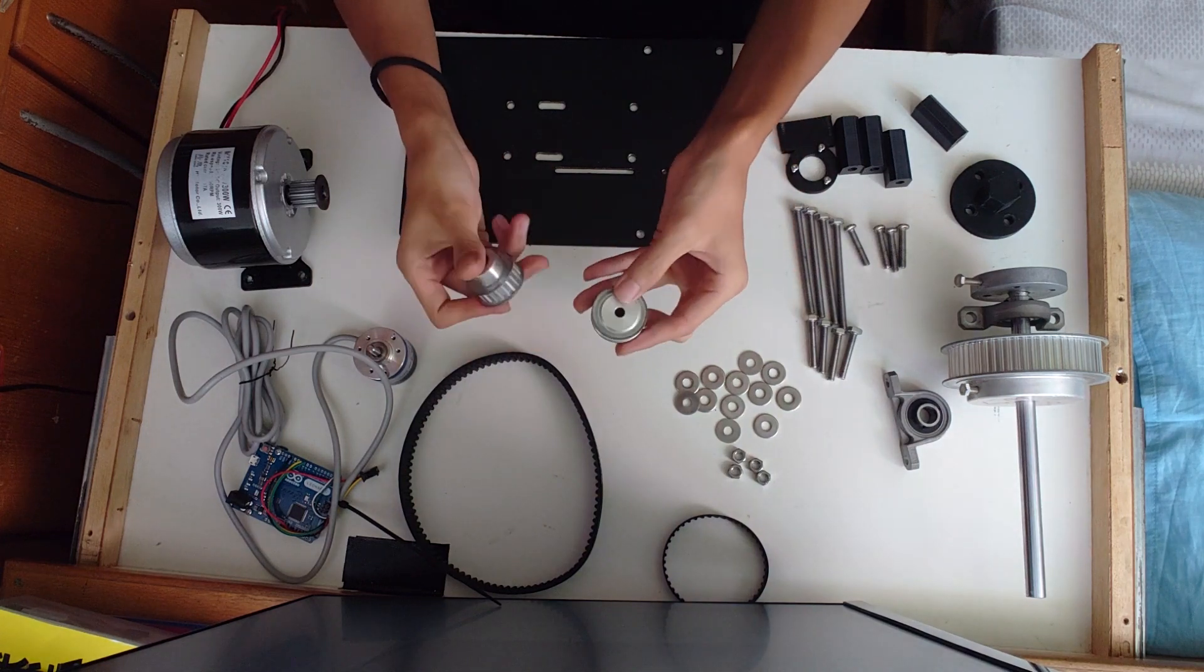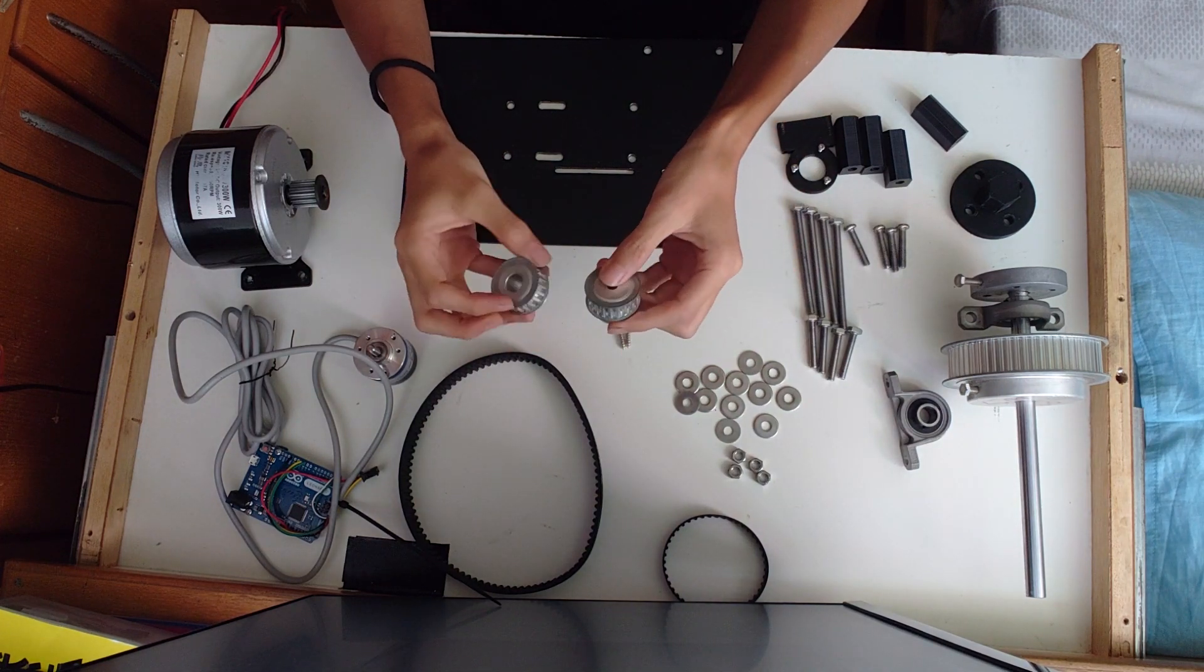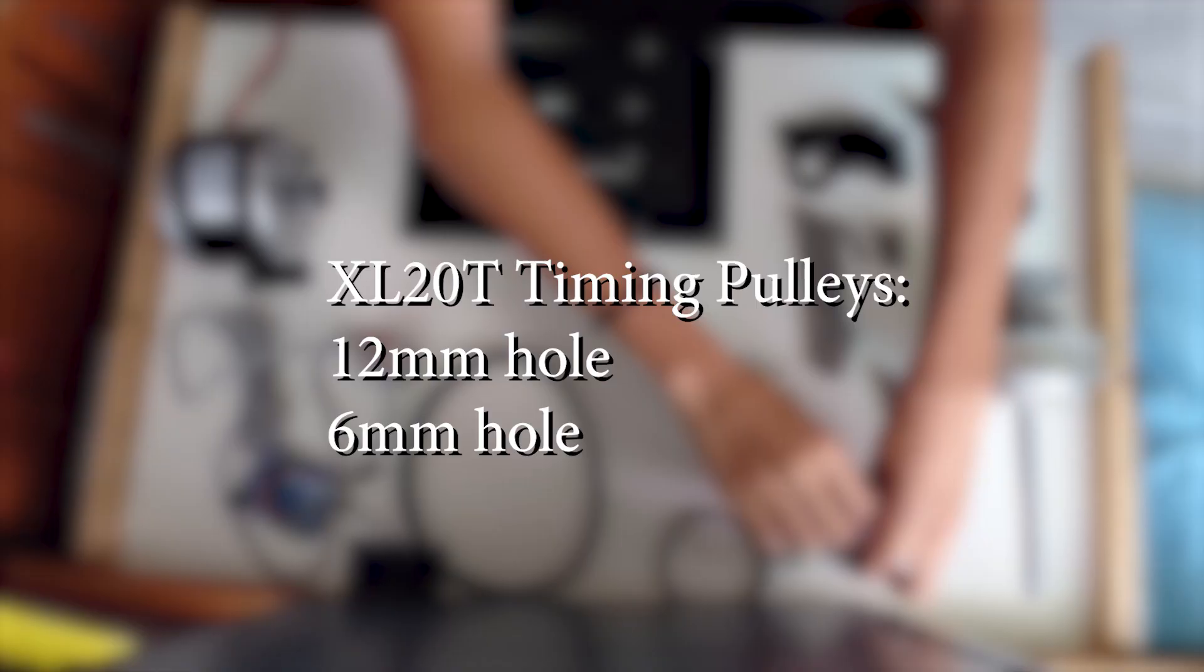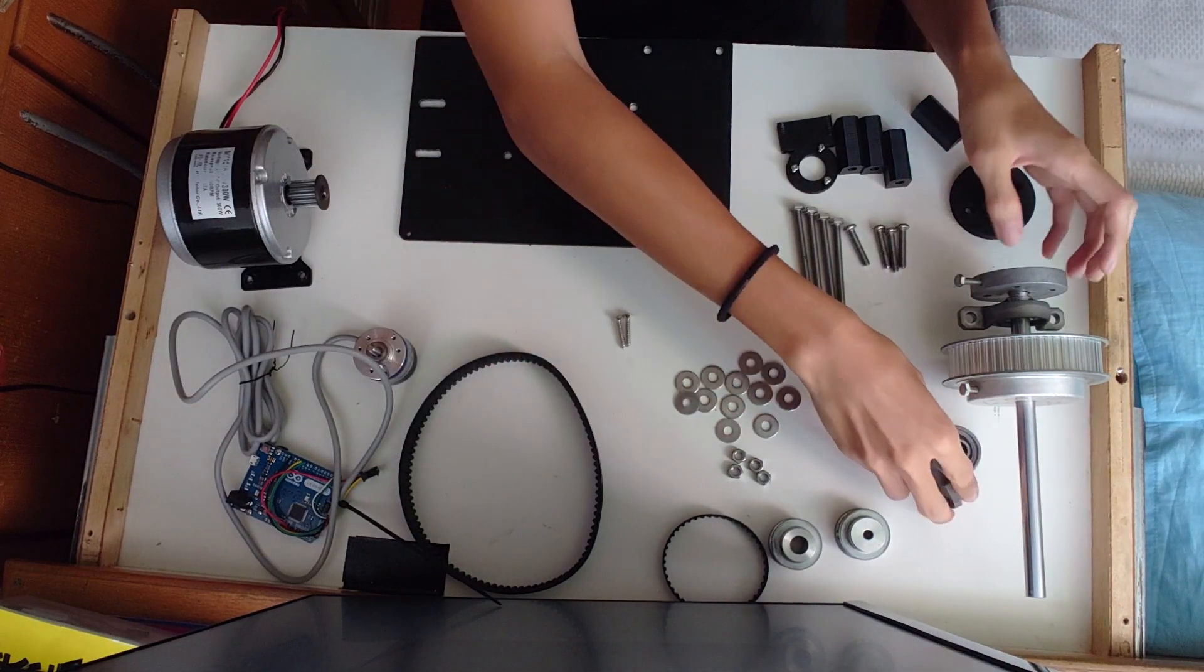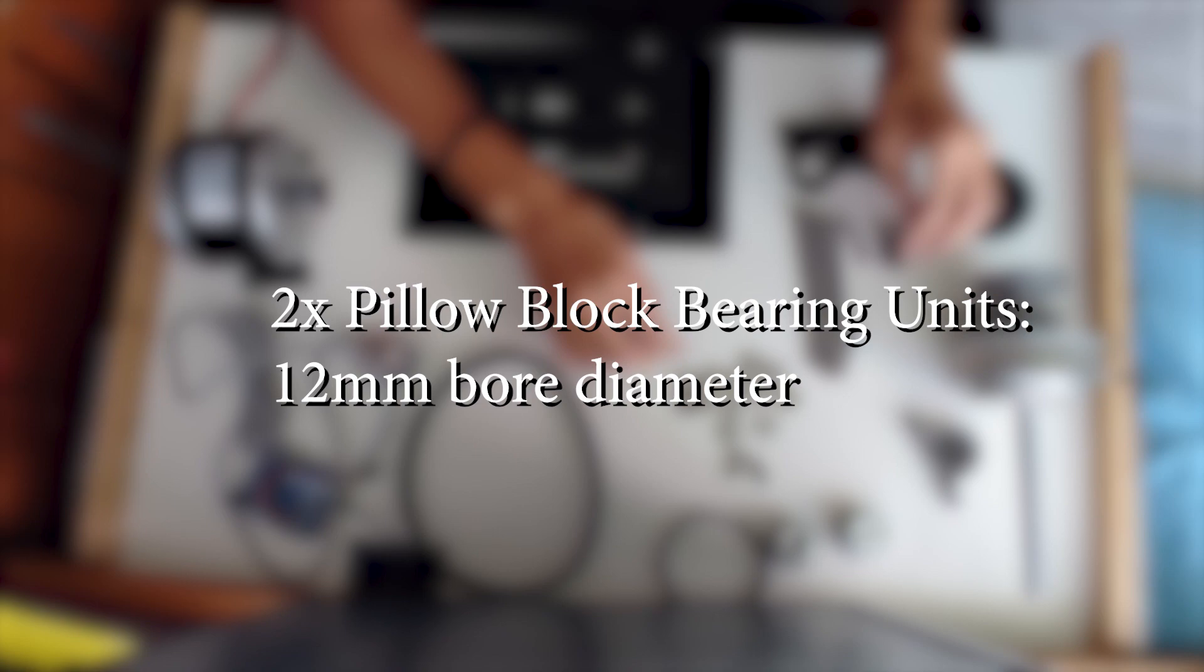Then there are two XL20 timing pulleys for the encoder part, one with 12mm hole and one with 6mm hole. Then there are two pillow block bearing units with 12mm bore diameter.